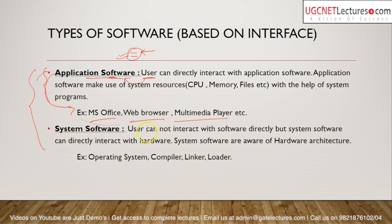With system software, the user cannot directly interact — only application software or other applications can interact with system software. For example, a compiler: you never see how the compiler looks or runs. You enter code and interact with the compiler, but you cannot see how it's compiling your program. With application software like MS Word, you can directly see what is being written on the page.